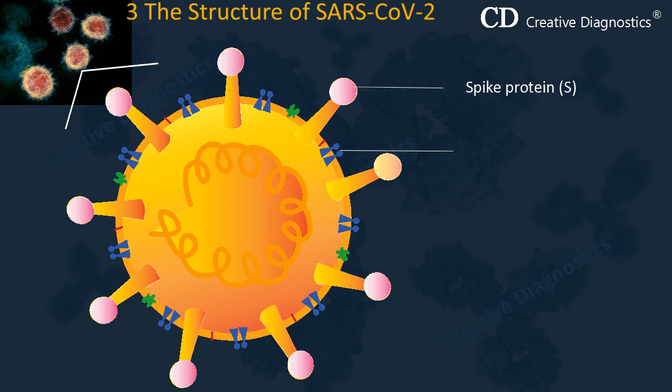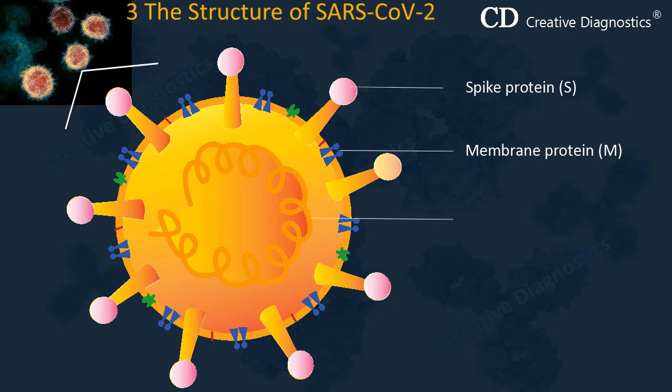The membrane (M) protein has a short N-terminal domain that projects on the external surface of the envelope and spans the envelope three times, leaving a long C-terminus inside the envelope. The M protein plays an important role in viral assembly. The nucleocapsid (N) protein associates with the RNA genome to form the nucleocapsid. It may be involved in the regulation of viral RNA synthesis and may interact with M protein during virus budding.